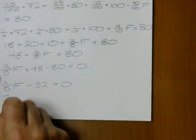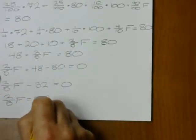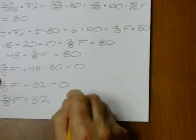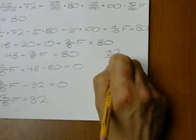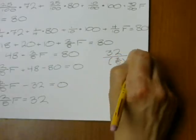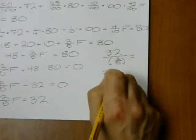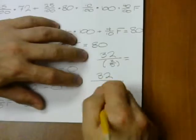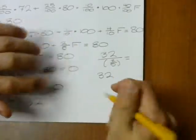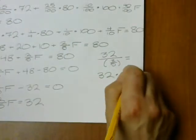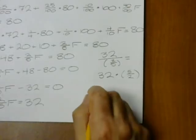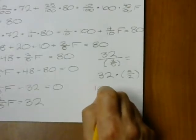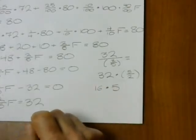or I could just move the 32 over to the right and get 32 divided by 2 fifths, which is equal to 32 times 5 halves. So that gives me 16 times 5.